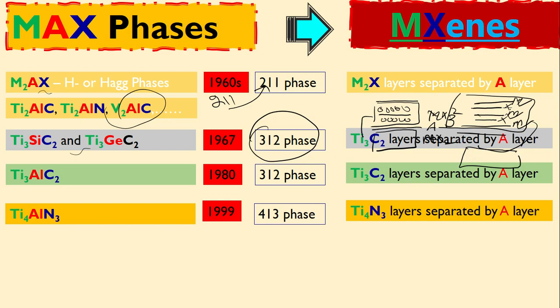This is how it looks like. So they discovered this phase and it was based on silicon and germanium. And later on in the 1980s they discovered similar phase but it was based on aluminum.